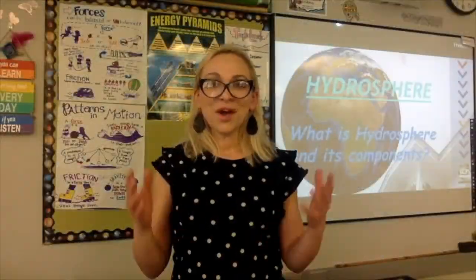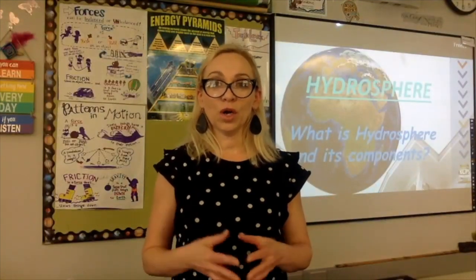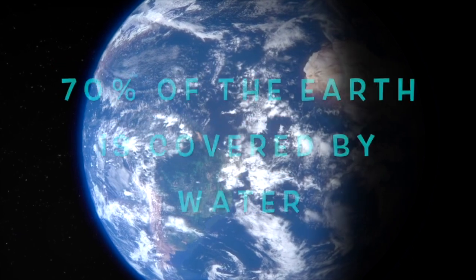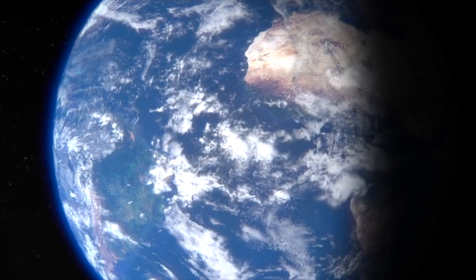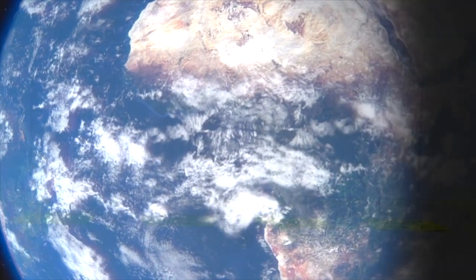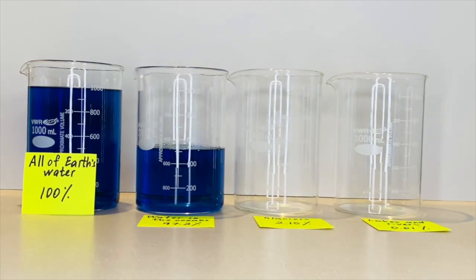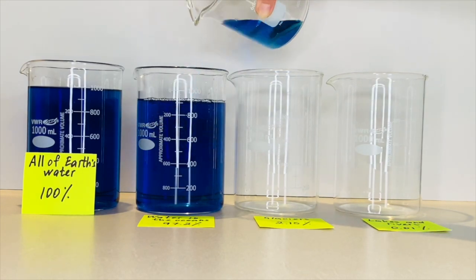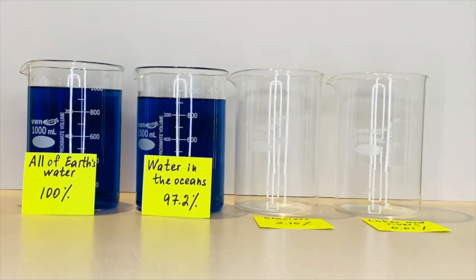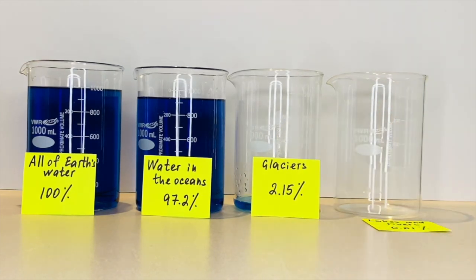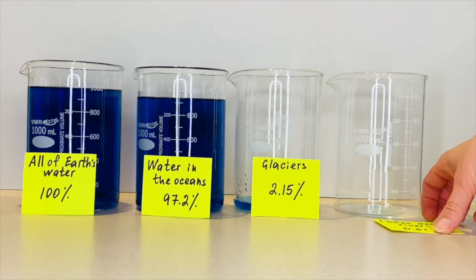Many people call Earth the water planet. Seventy percent of Earth is covered by water, yet only a small portion is available for human use. Of the total water supply, 97% is located in the oceans as salt water, leaving just 3% as fresh water. Three-quarters of that fresh water is frozen in glaciers, and less than 1% of Earth's total water supply is available for human use, and much of it lies underneath Earth's surface.